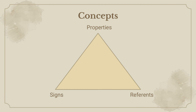So we have here a figure. In the top are the properties, and at the bottom are signs and reference. Properties are common qualities that all examples of concepts share. Signs are words or symbols that name a concept. And references are examples of concepts.